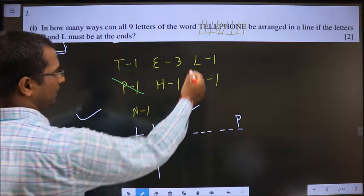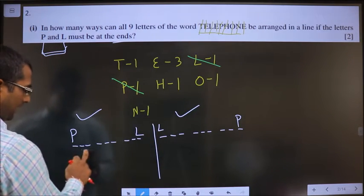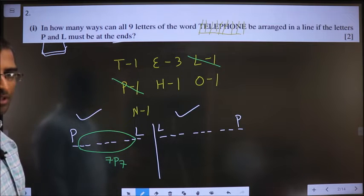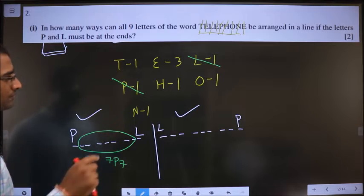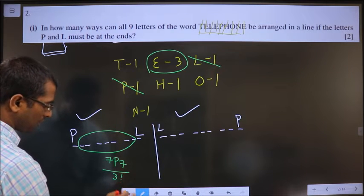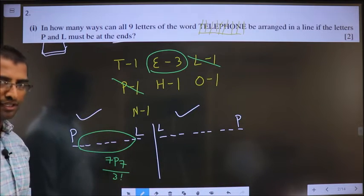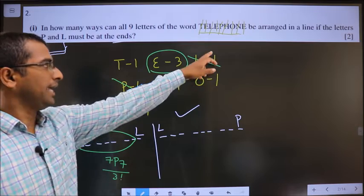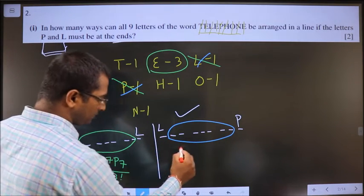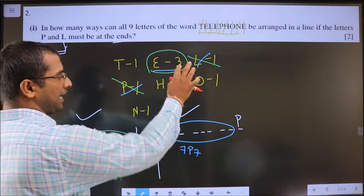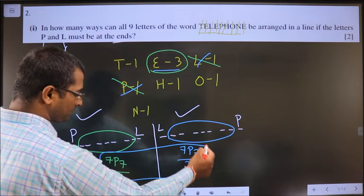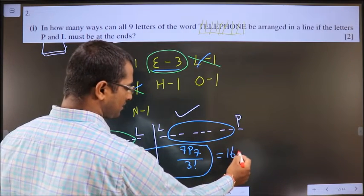For each option, P and L are gone — 7 letters remain to fill 7 places, arranged in 7P7 ways. In these 7 letters, the 3 E's are identical, so divide by 3!. The same calculation applies to the second option: 7P7 divided by 3!. Add both options: the final answer is 1680.